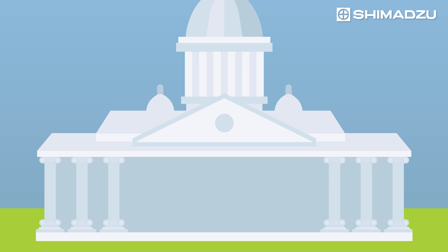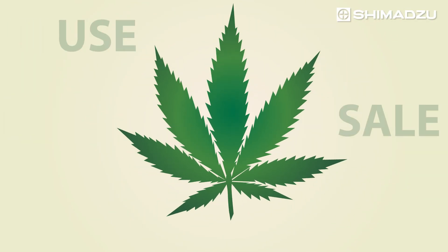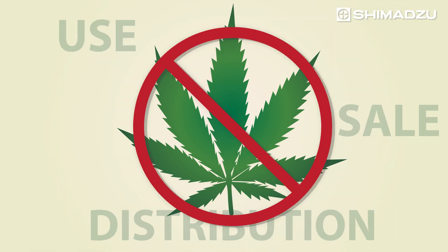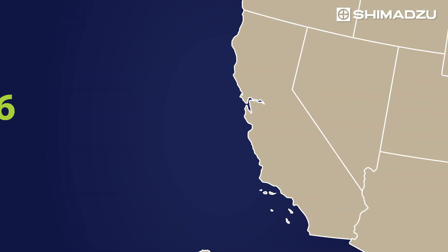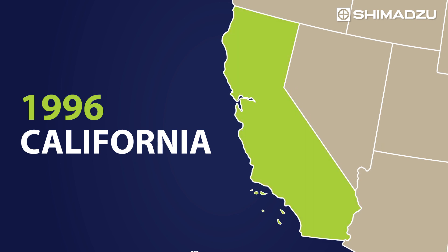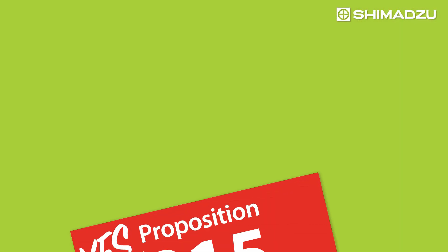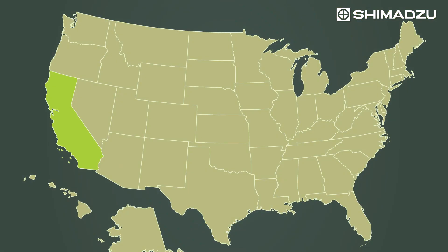Shortly after that, however, federal regulations were enacted that prohibited the use, sale and distribution of marijuana due to its psychoactive properties. Fast forward to 1996 — that's the year voters in California passed an initiative to legalize medical marijuana. Cannabis was making a comeback.